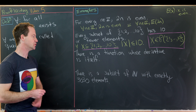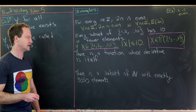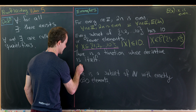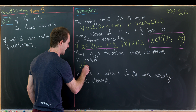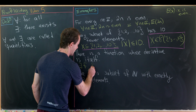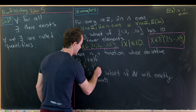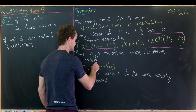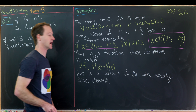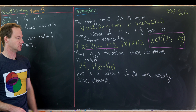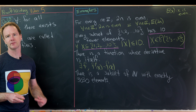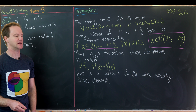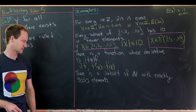Next: there is a function whose derivative is itself. We write: there exists an f such that f'(x) = f(x). This is true — we can think of a function right away. That would be the exponential function e^x.